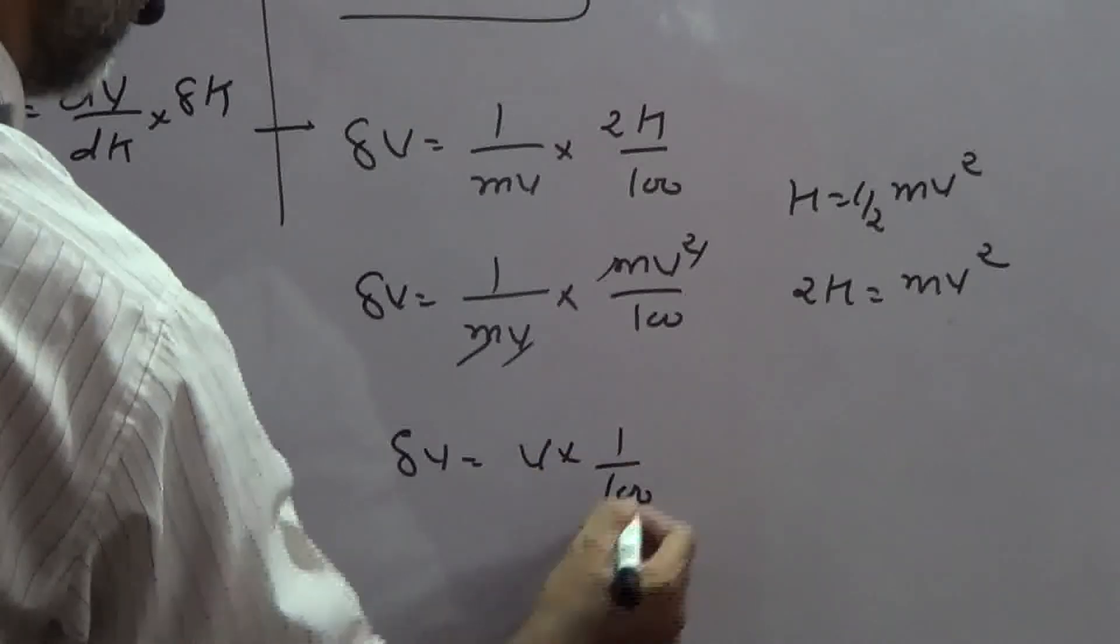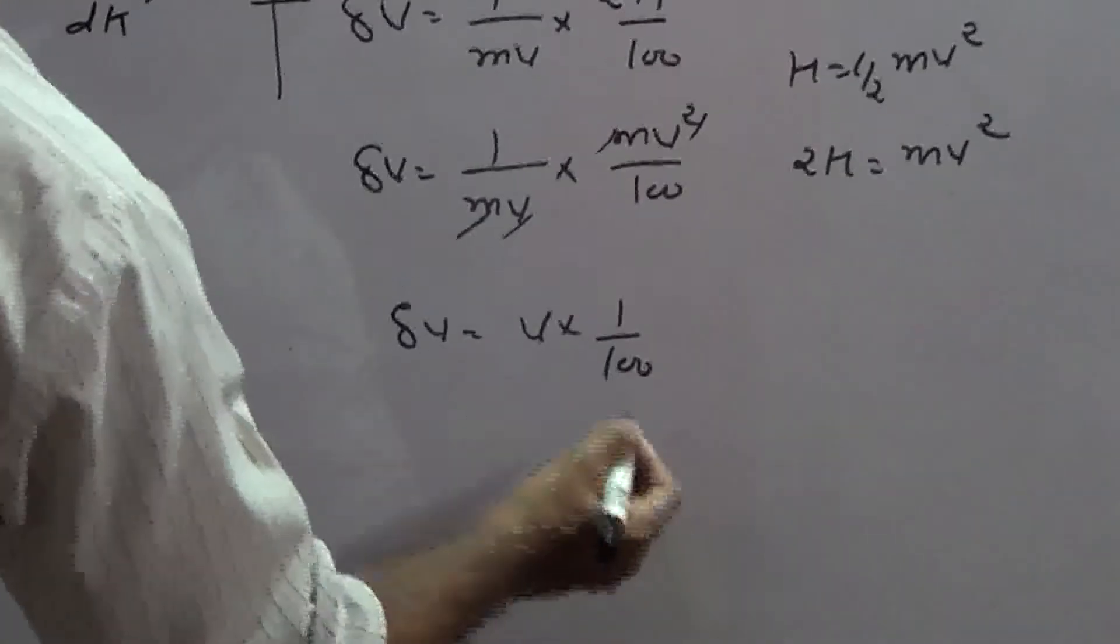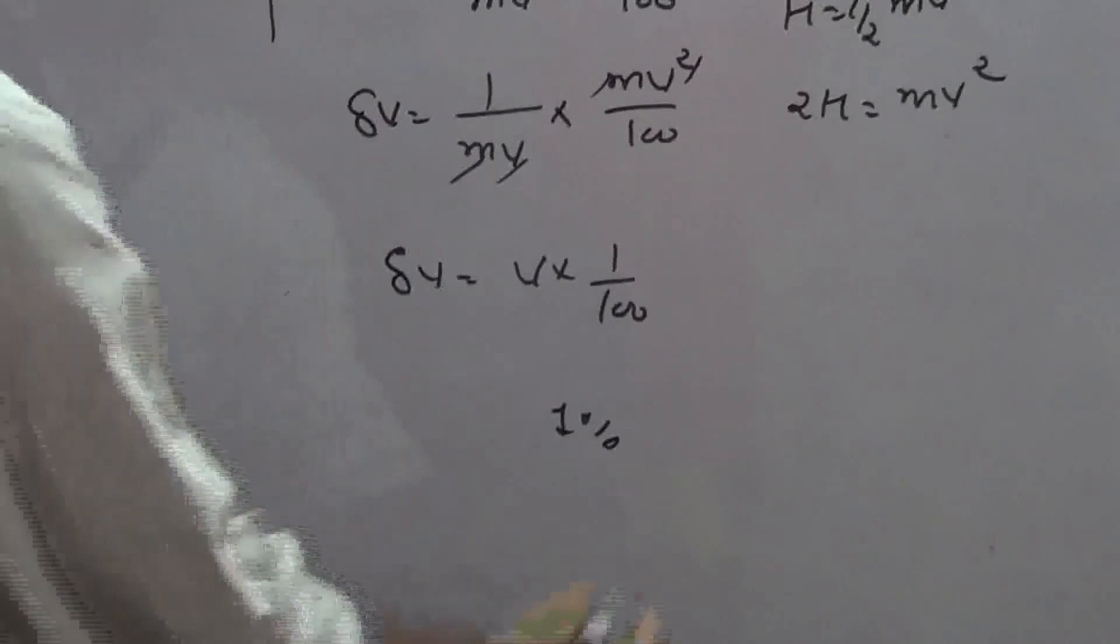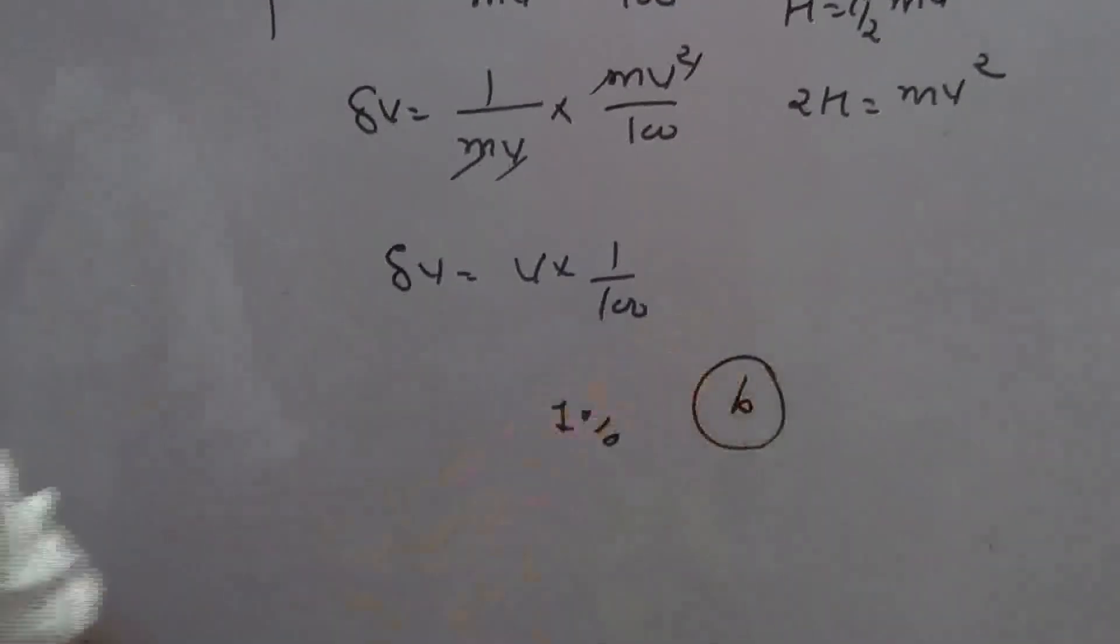Delta V equals V into 1 by 100. So velocity mein jo increase hoga, wo kitna hoga? 1% aur 1% ke related choice jo ho jati hai, wo B ho jati hai.